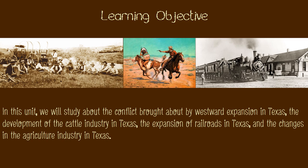Our learning objective in this unit is to study the conflict brought about by westward expansion and Manifest Destiny in Texas, the development of the cattle industry, the expansion of railroads, and changes in the agricultural industry — and to understand their impact on the political, economic, geographic, and social aspects of the state. By the end of this video, this is what you should be able to walk away understanding.